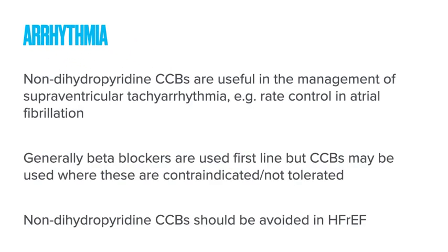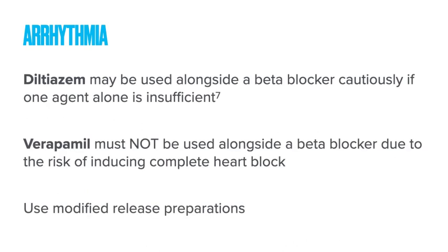Next, arrhythmia. For rate control of arrhythmia we use non-dihydropyridines — usually meaning rate control in atrial fibrillation. Beta blockers are generally first line, but if someone can't take a beta blocker you could certainly use a non-dihydropyridine calcium channel blocker as an alternative. These drugs should not be used if the patient has co-existent heart failure with a reduced ejection fraction; if they have a preserved ejection fraction it seems to be okay. You can give diltiazem and a beta blocker simultaneously, cautiously and with close monitoring, but you must never give verapamil at the same time as a beta blocker — this includes ocular beta blockers such as timolol — as you can cause third-degree heart block and sudden cardiac death. If using diltiazem or verapamil, I strongly suggest a modified release preparation for ease of dosing.